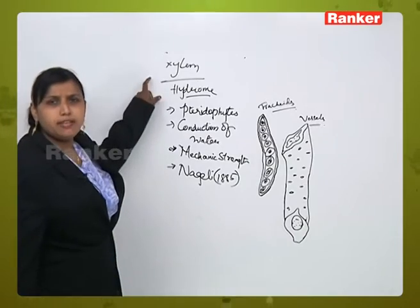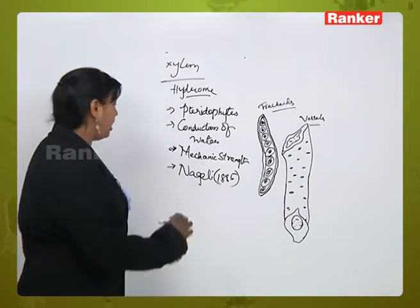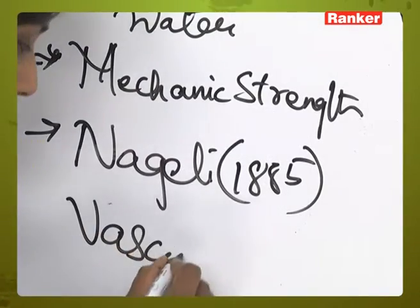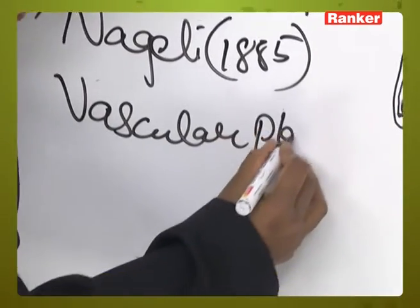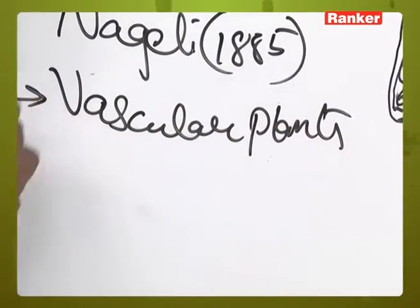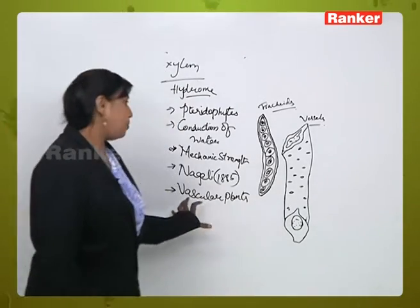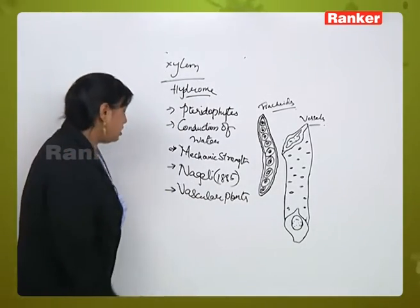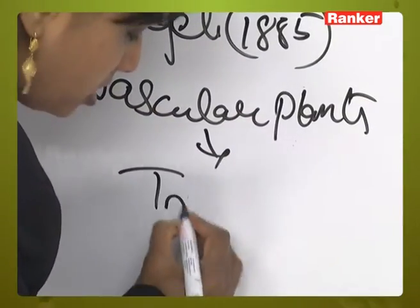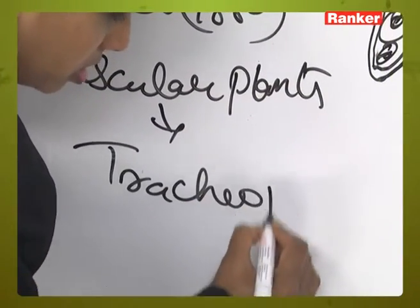Plants which have xylem tissue in them are called vascular plants. Vascular plants are otherwise called tracheophytes.